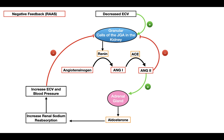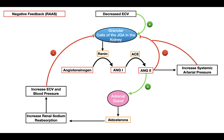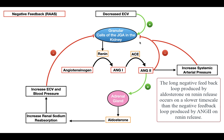In addition, angiotensin 2 itself will also inhibit the granular cells of the juxtaglomerular apparatus from releasing renin — a short-loop feedback. Angiotensin 2 increases systemic arterial pressure, which also inhibits the granular cells from releasing renin. These are all ways in which negative feedback on the renin-angiotensin-aldosterone system prevents aldosterone from being over-secreted.